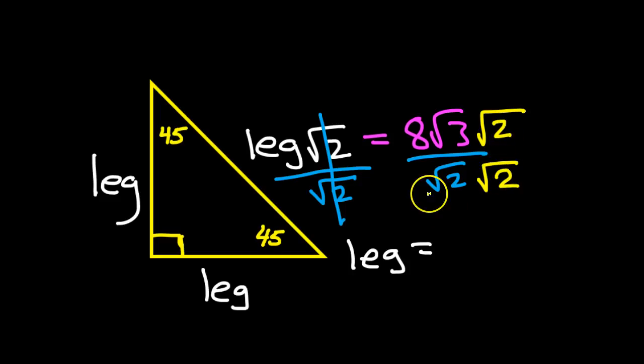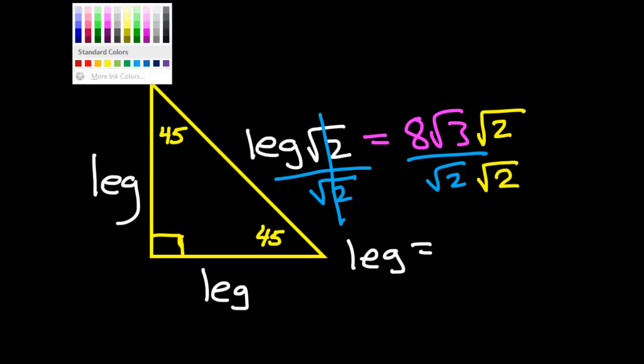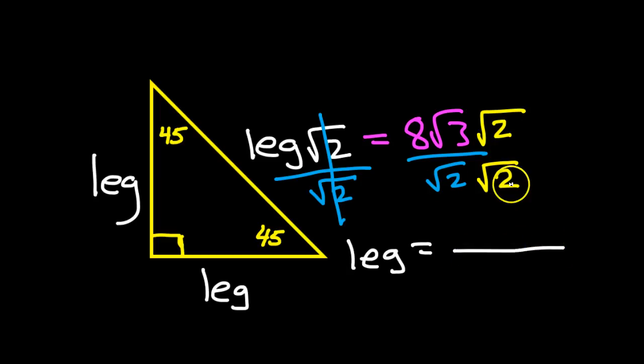And that doesn't change anything. So now, getting back to business, radical two times radical two is just two, which makes sense because radical two times radical two would equal radical four, and the square root of four is two. But a long time ago, we memorized that. If you multiply radical times itself, the number sort of comes out. Meanwhile, in the numerator here, I have my eight. I'm just going to keep that. Now, radical three times radical two. Go ahead and multiply those together and get radical six. All right?